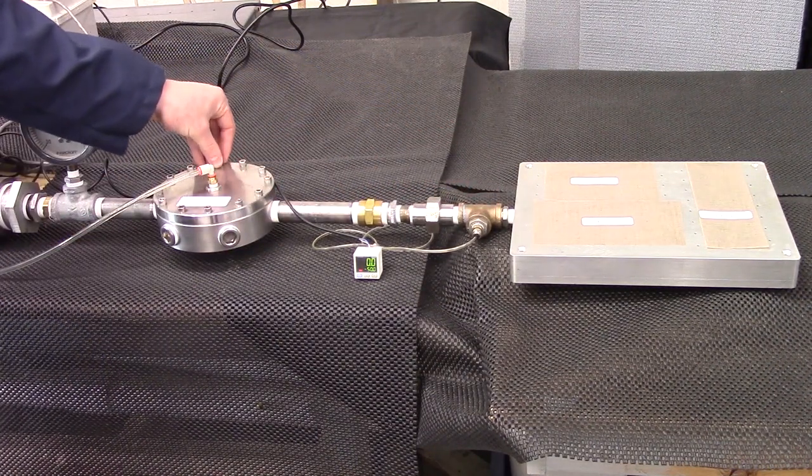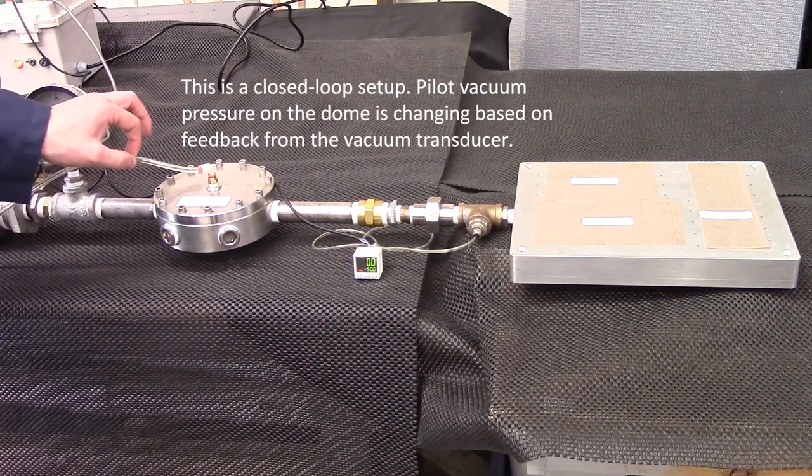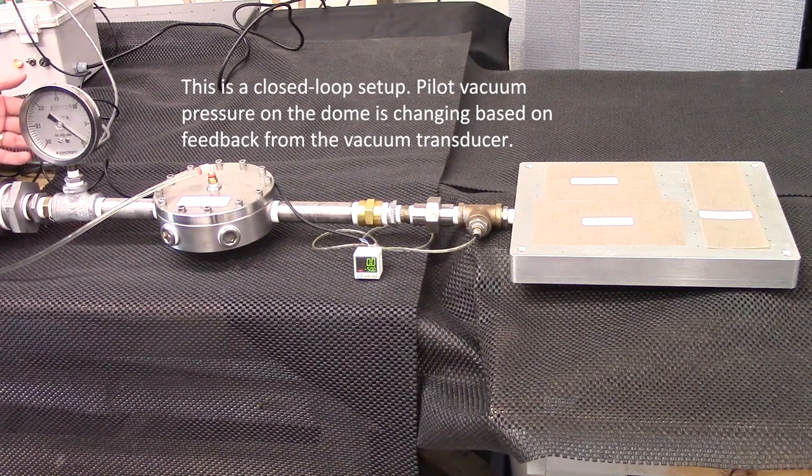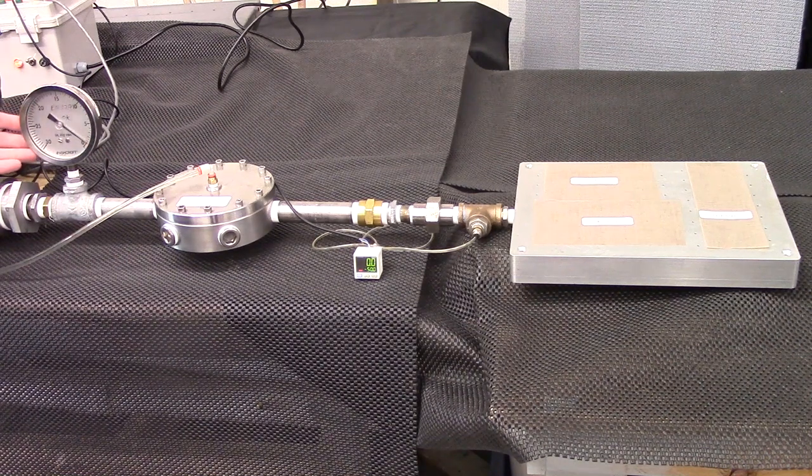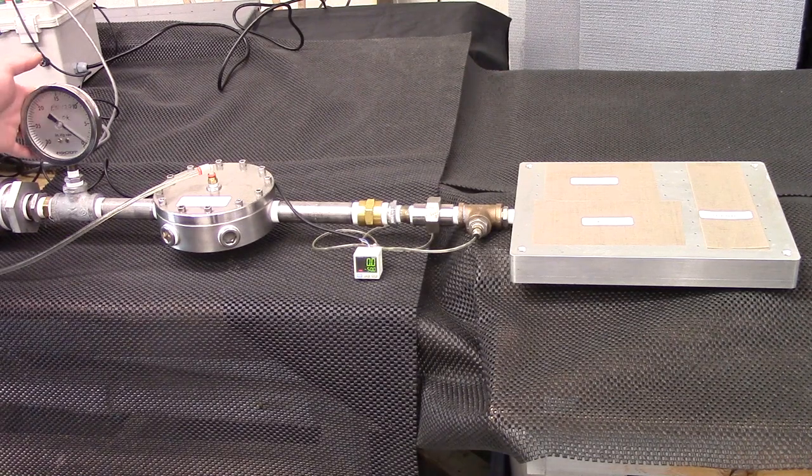Next we have an Equilibar EVR GSD6 valve which is controlled by electro-pneumatic pilot regulator. Finally, we have a vacuum gauge which displays our vacuum supply to the system, which will be about 23 inches of mercury, simulating a typical industrial vacuum header.